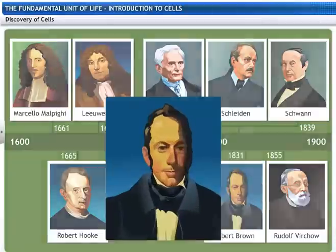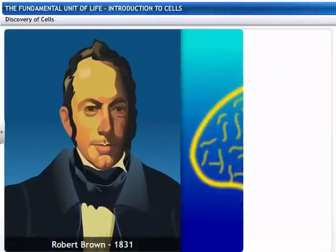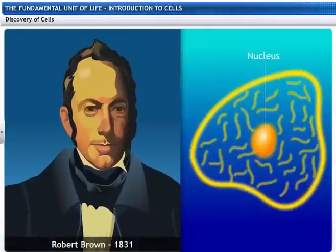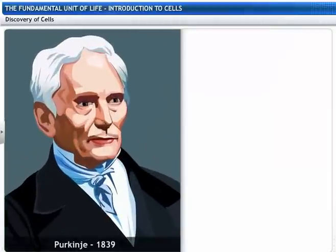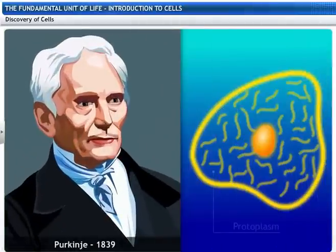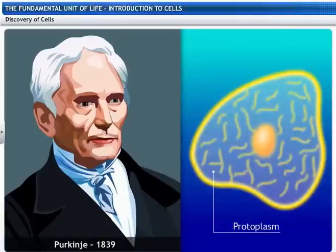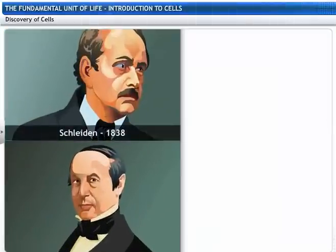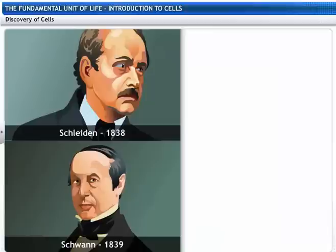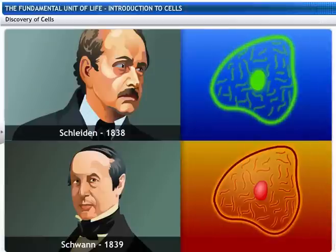Robert Brown, in 1831, discovered the nucleus in the cell. Purkinjer, in 1839, coined the term protoplasm for the fluid substance of the cell. Two biologists, Schleiden, in 1838, and Schwann, in 1839, proposed the cell theory that all plants and animals are composed of cells.